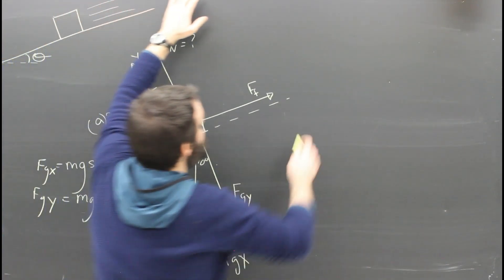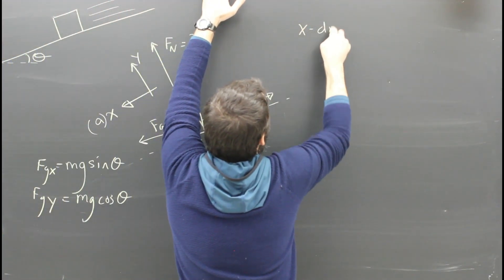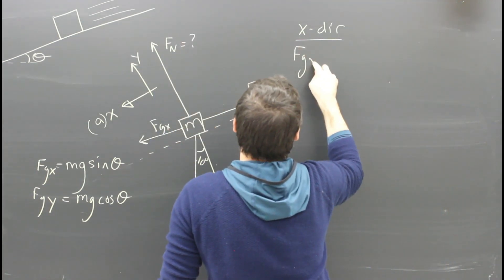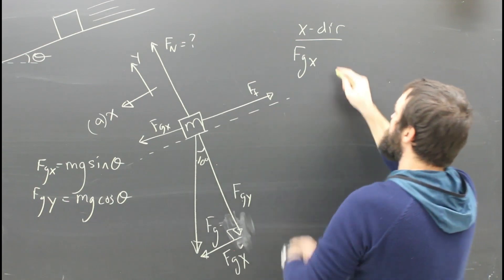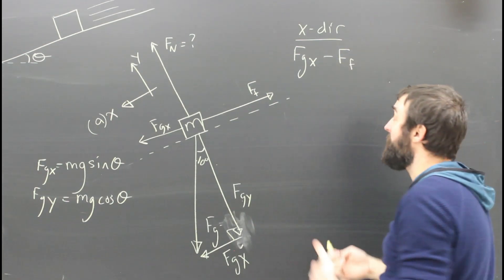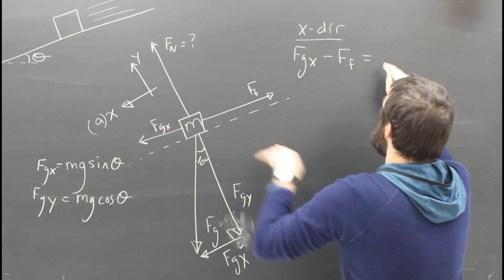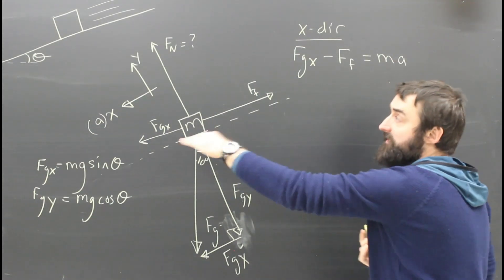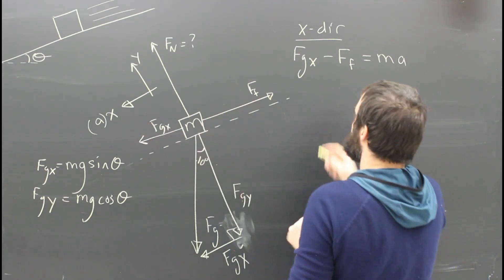So what are my two equations? The x direction equation is Fgx. That's what's making it want to go down the hill, and friction, depending on how big it is, is either stopping it or slowing it down. And that is going to be equal to the mass times the acceleration, as the x direction always is when you pick x as the direction of acceleration.